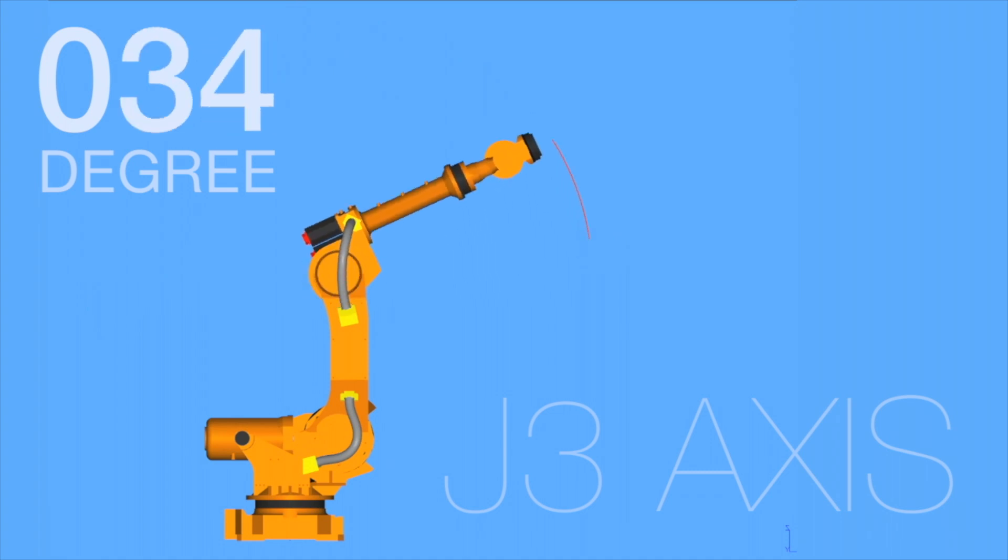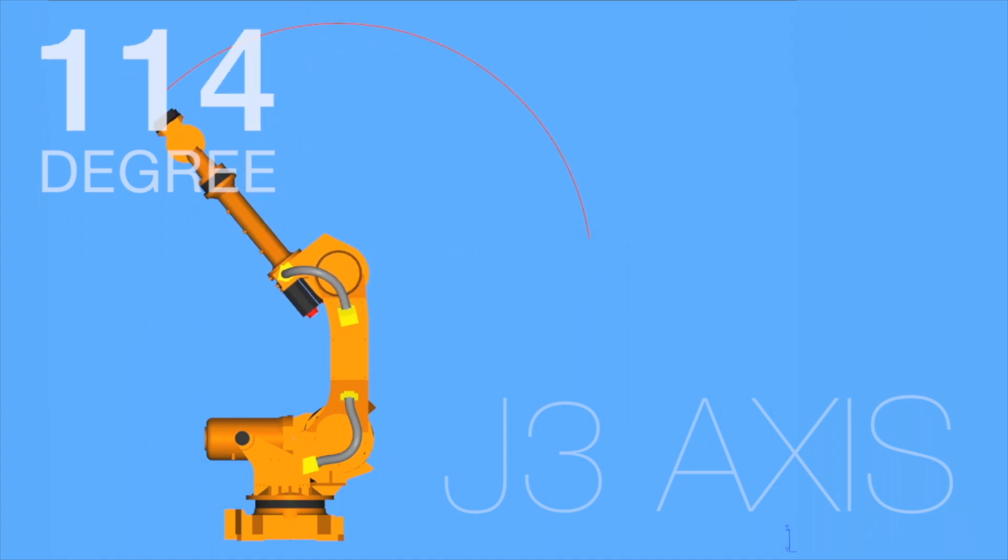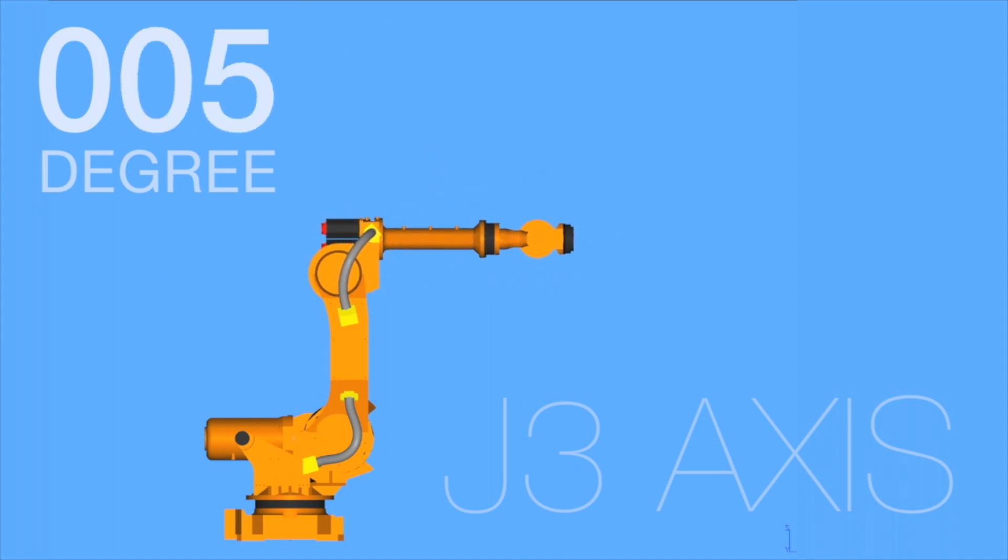Axis 3: This axis extends the robot's vertical reach. It allows the upper arm to raise and lower. On some articulated models, it allows the upper arm to reach behind the body, further expanding the work envelope.